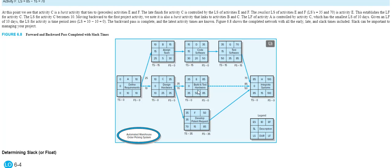But notice C, E, and H all have 0s. That means 0 float, 0 slack. That means these activities cannot be delayed, and if they are, the overall project is delayed.